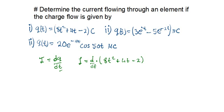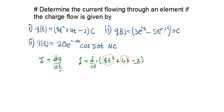This is very straightforward — it's basic differentiation. We are differentiating charge with respect to time t, just like differentiating y with respect to x. The constant term gives 0, the 4t term gives 4, and 8t squared gives 16t. So our current is equal to 16t plus 4 amperes.